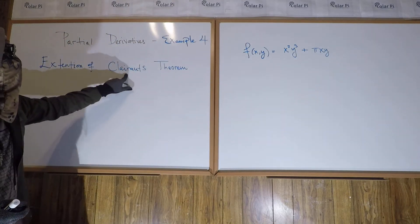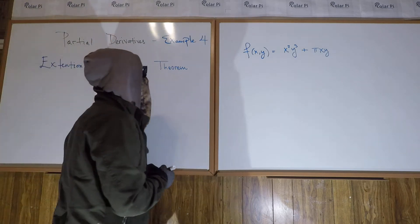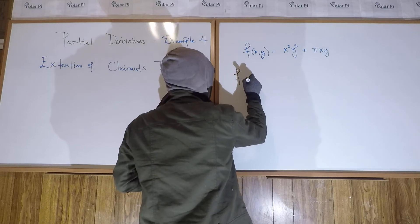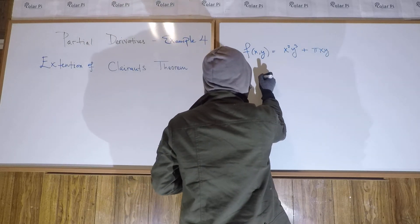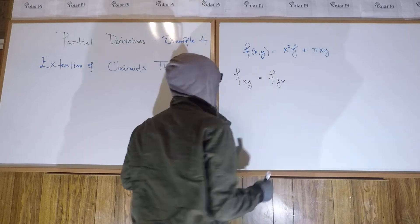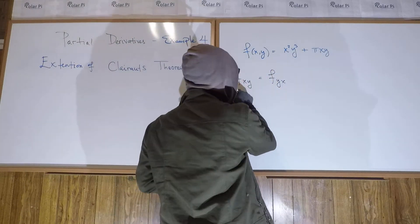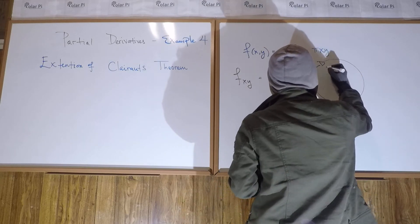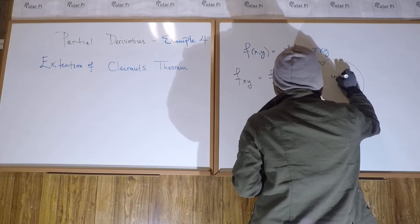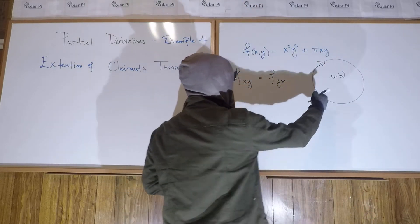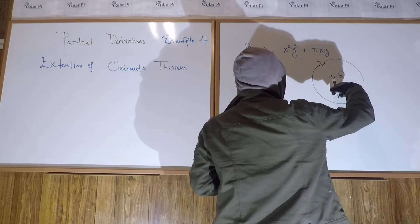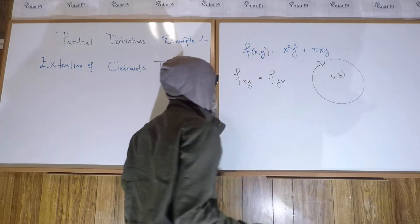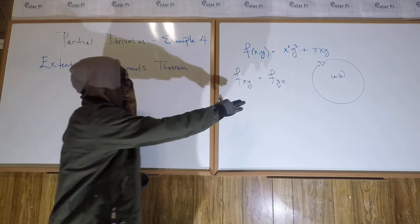Now, what we said in the last example by Clairot's theorem is that, say, for this function, Fxy has to be equal to Fyx, so long as both of these mixed partials are continuous in some domain D containing the points AB that we're going to evaluate them at. So, for any AB in this disc D, so long as both this mixed partial and this mixed partial are continuous in that disc D, this has to be true.